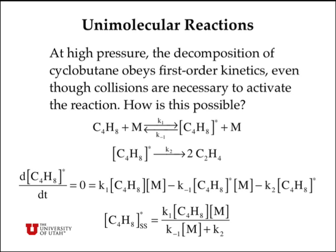Cyclobutane does this by a first step which is reversible and a second step which is irreversible. If we consider the energized molecule C4H8* to be a chemical intermediate capable of undergoing this reaction to ethylene, then we can write the time rate of change of the activated molecule to be zero. This is the steady-state approximation, and that equals the sum of three different rates.